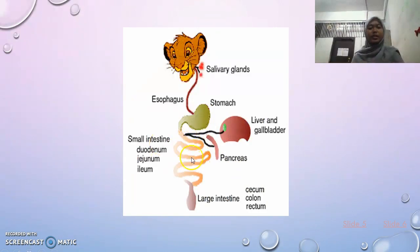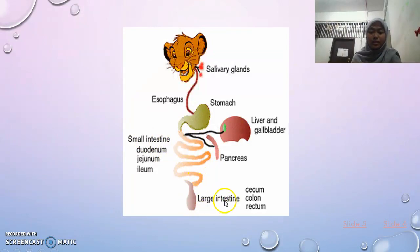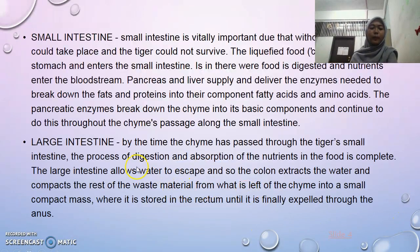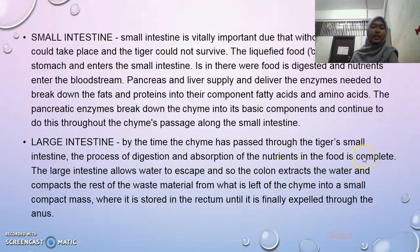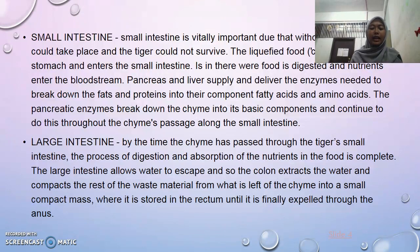After the small intestine process is complete, the food goes into the large intestine. The large intestine consists of the cecum, colon, and rectum. By the time the chyme passes through the tiger's small intestine, the bulk of digestion and absorption of nutrients is complete. The large intestine allows water to be absorbed, and the colon compacts the remaining waste material into a small mass stored in the rectum until it is expelled through the anus.